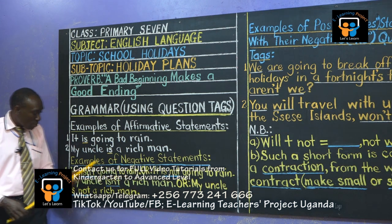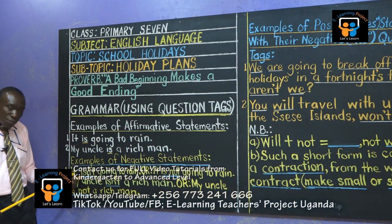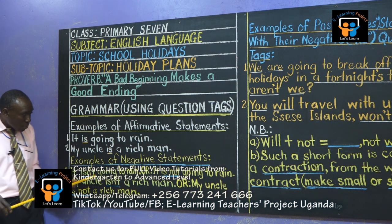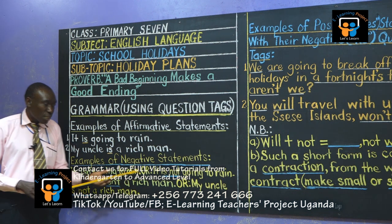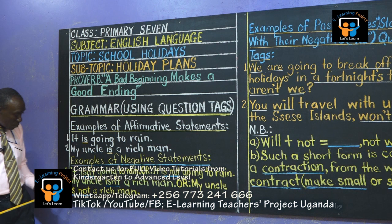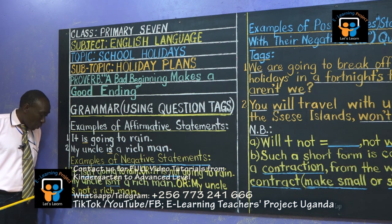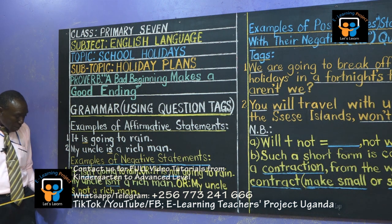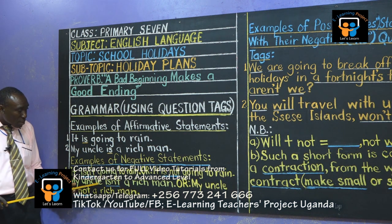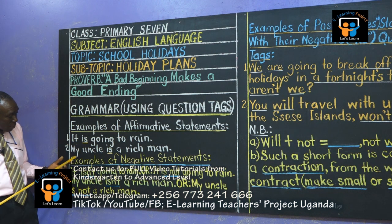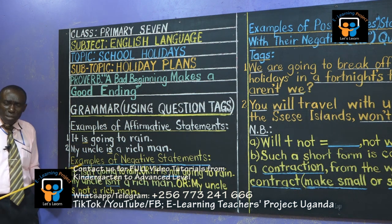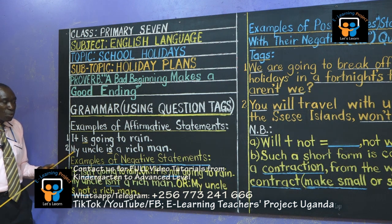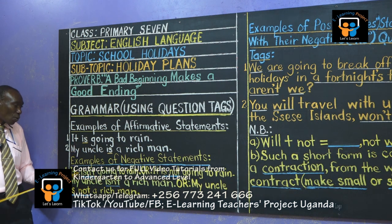So 'is not' put together gives us 'isn't'. We say it isn't going to rain, or it is not going to rain. Good. The second example, in the negative form — the negative sentence statement — my uncle isn't. In the affirmative, we said my uncle is.